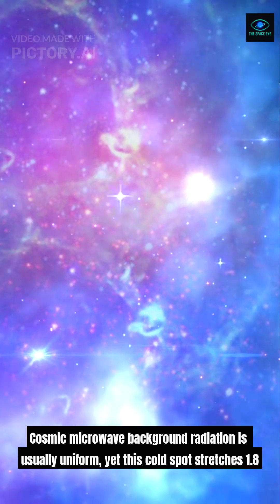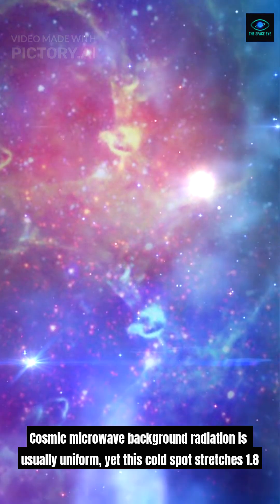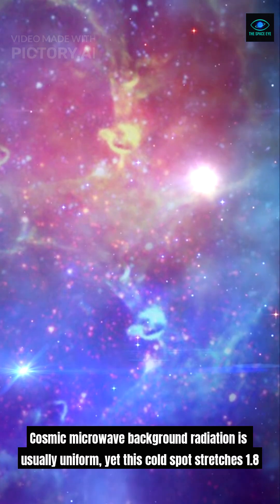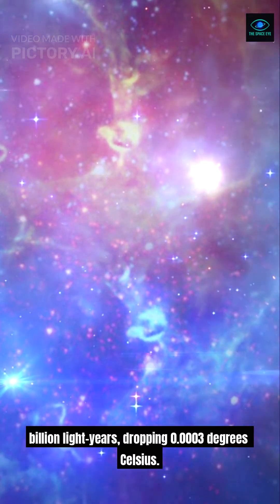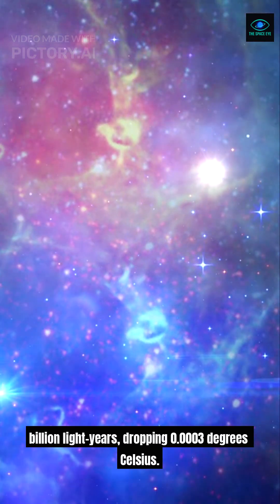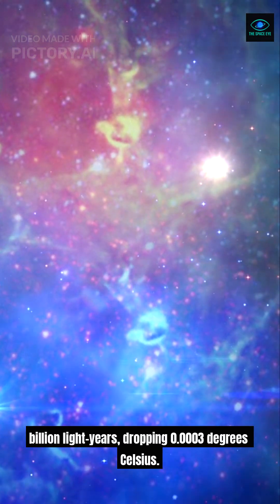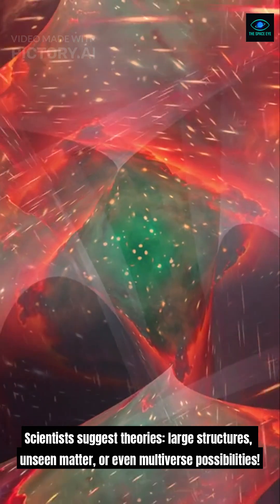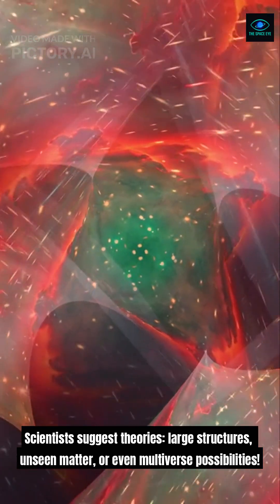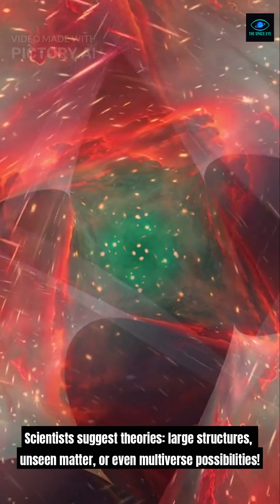Cosmic microwave background radiation is usually uniform, yet this cold spot stretches 1.8 billion light-years, dropping 0.0003 degrees Celsius. Scientists suggest theories: large structures, unseen matter, or even multiverse possibilities.